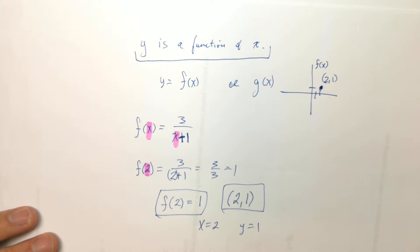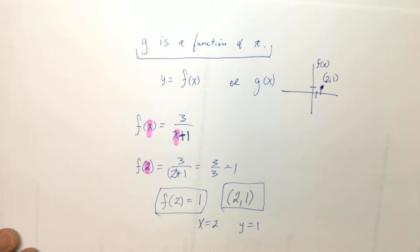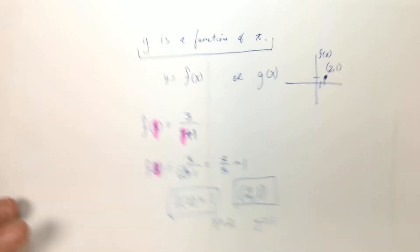So this and this mean the same thing. They both mean that when x is 2, y equals 1. Good so far? Alright. Onward and upward.